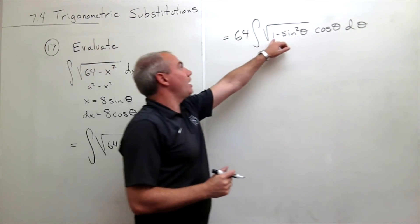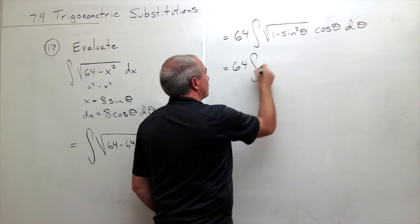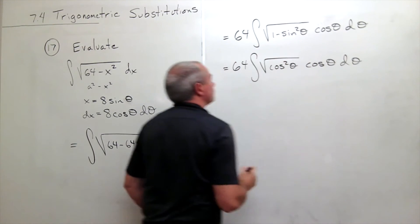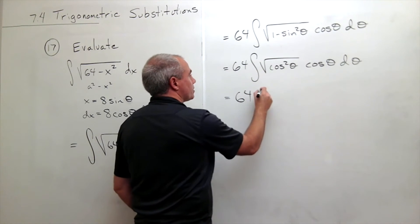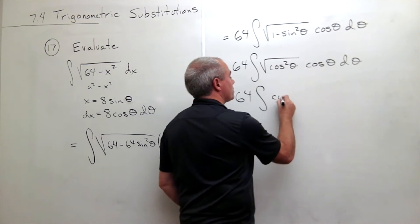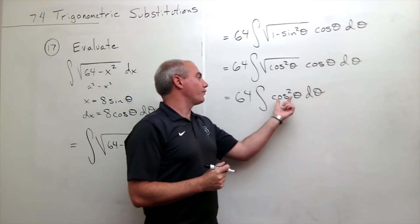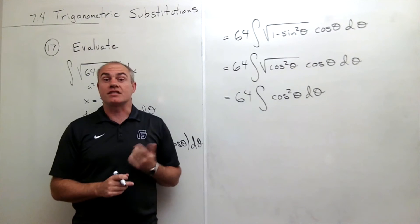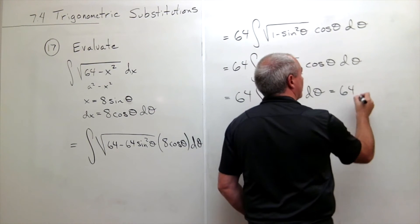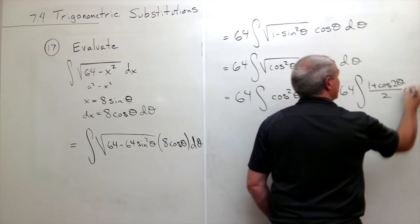Now we know that 1 minus sine squared theta is otherwise known as cosine squared theta. So I can rewrite this as 64 times the integral of the square root of cosine squared theta times cosine theta d theta. Rewriting again, the square root of cosine squared theta is just cosine theta, times cosine theta gives cosine squared theta d theta. Since the power is even, I need to use the half angle identities. So I rewrite this as 64 times the integral of (1 plus cosine of 2 theta) over 2 d theta.